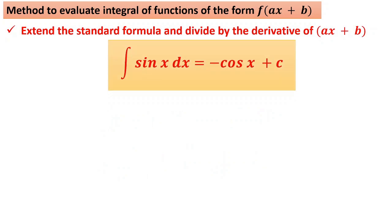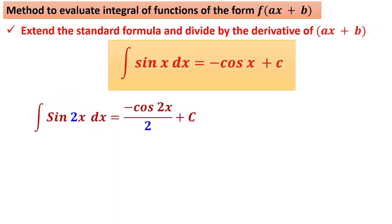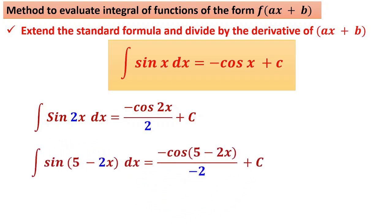We have the formula ∫sin x dx = −cos x. If it is sin 2x, it is −cos 2x / 2. If it is sin(5 − 2x), it is −cos(5 − 2x) / (−2).